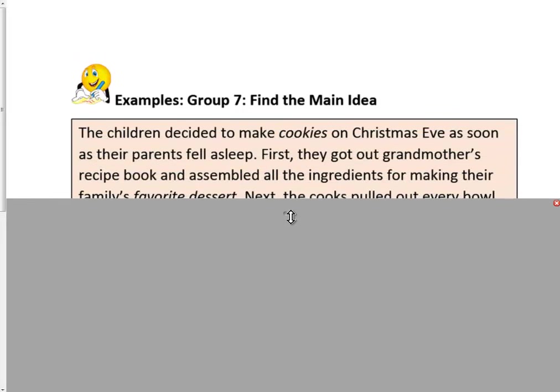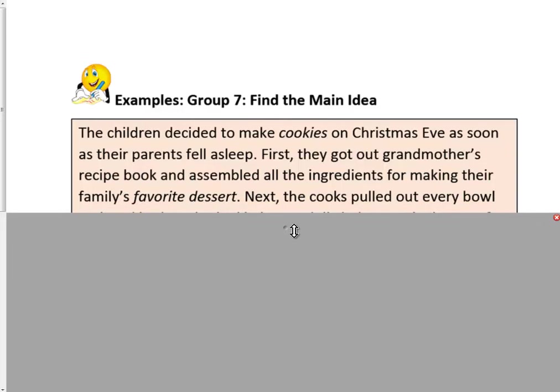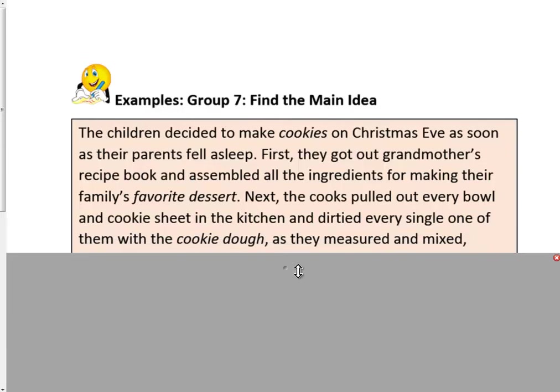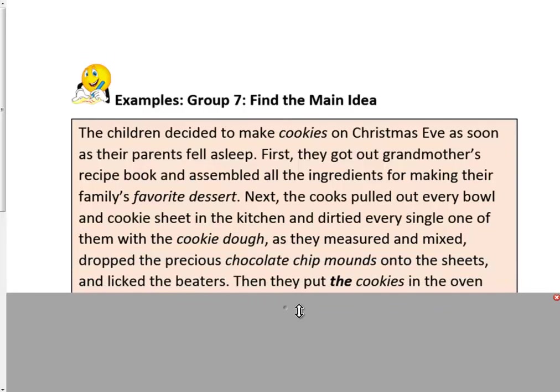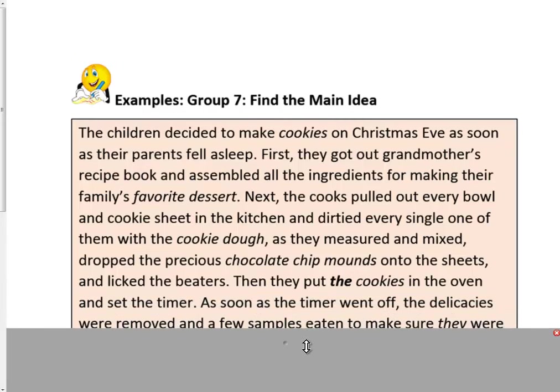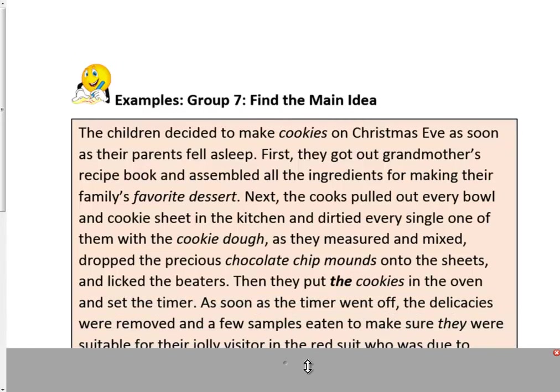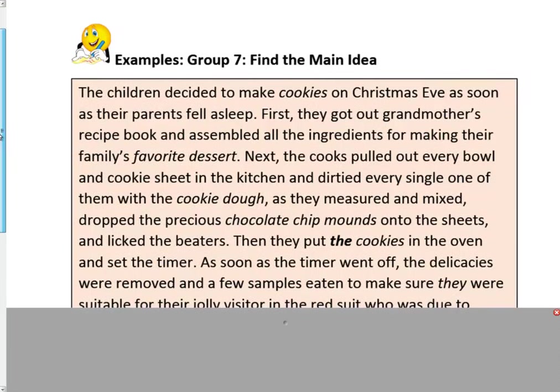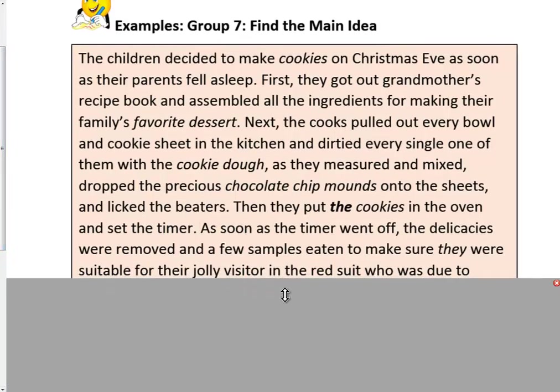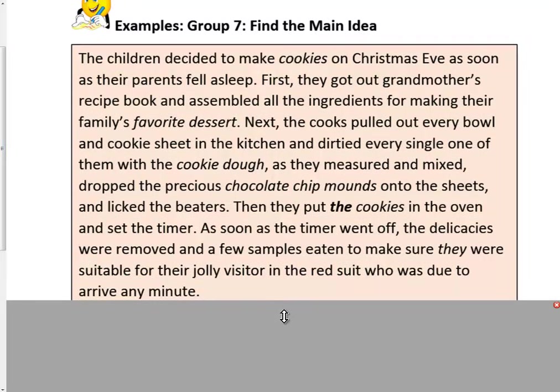The children decided to make cookies on Christmas Eve as soon as their parents fell asleep. First, they got out grandmother's recipe book and assembled all the ingredients for making their family's favorite dessert. Next, the cooks pulled out every bowl and cookie sheet in the kitchen and dirtied every single one of them with the cookie dough. As they measured and mixed, they dropped the precious chocolate chip mounds onto the sheets and licked the beaters. Then they put the cookies in the oven and set the timer. As soon as the timer went off, the delicacies were removed and a few samples eaten to make sure they were suitable for their jolly visitor in the red suit who was due to arrive any minute.